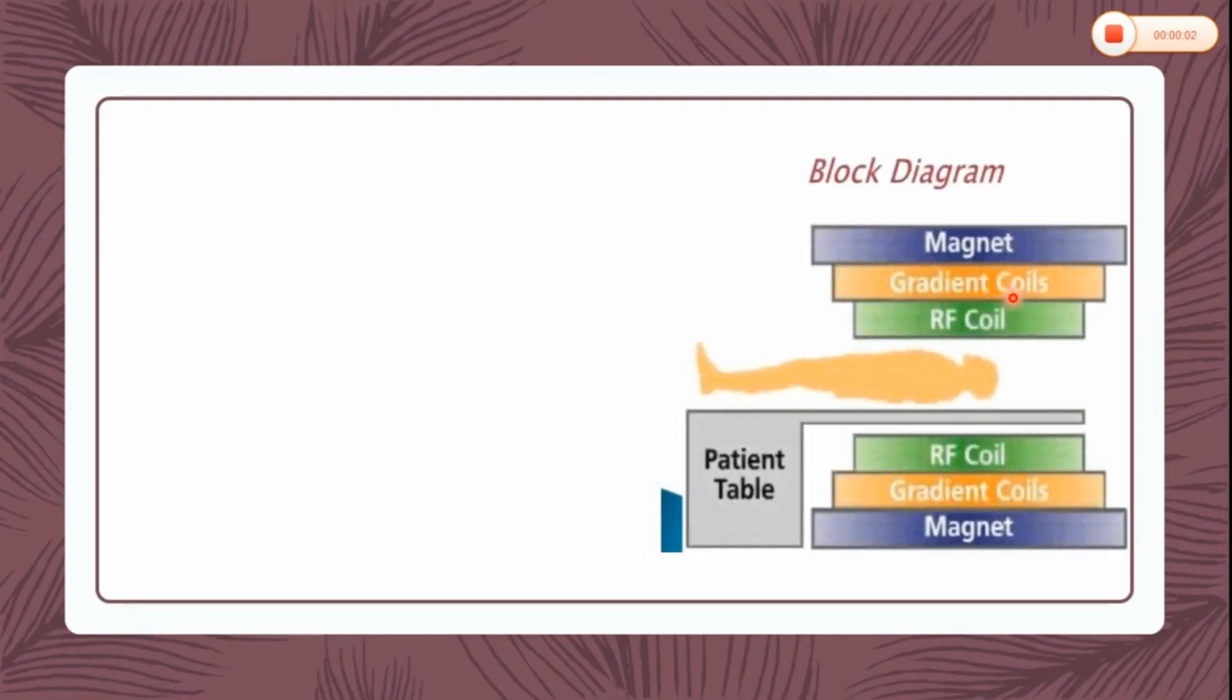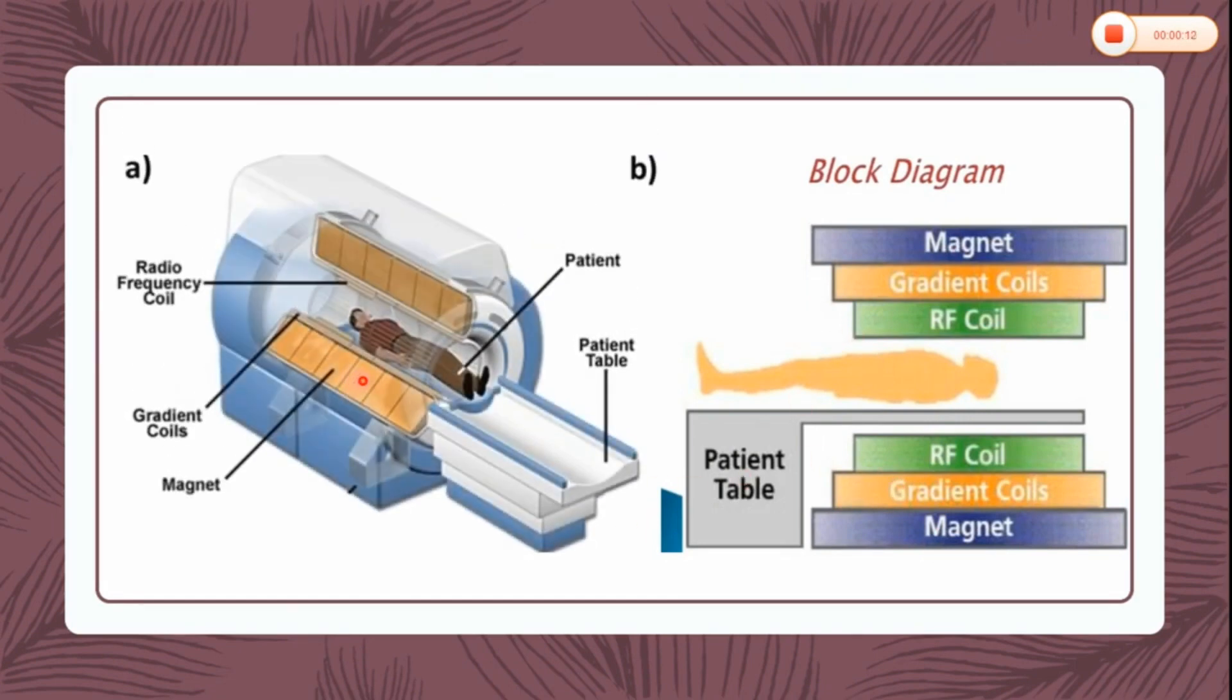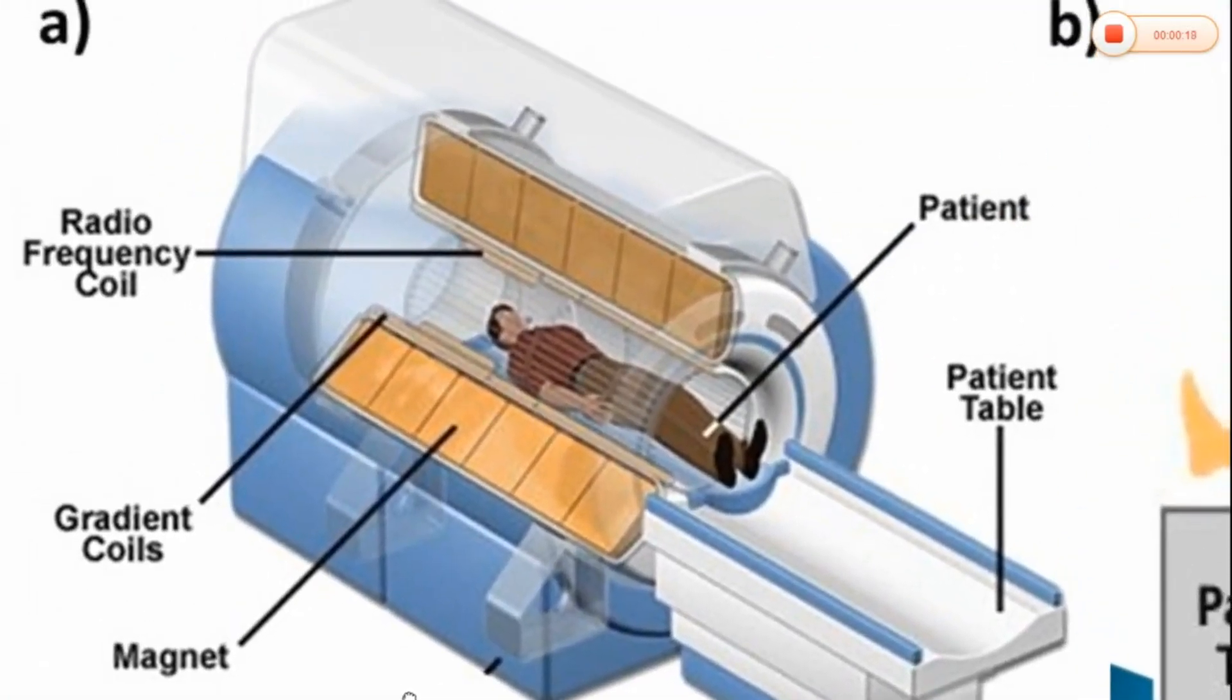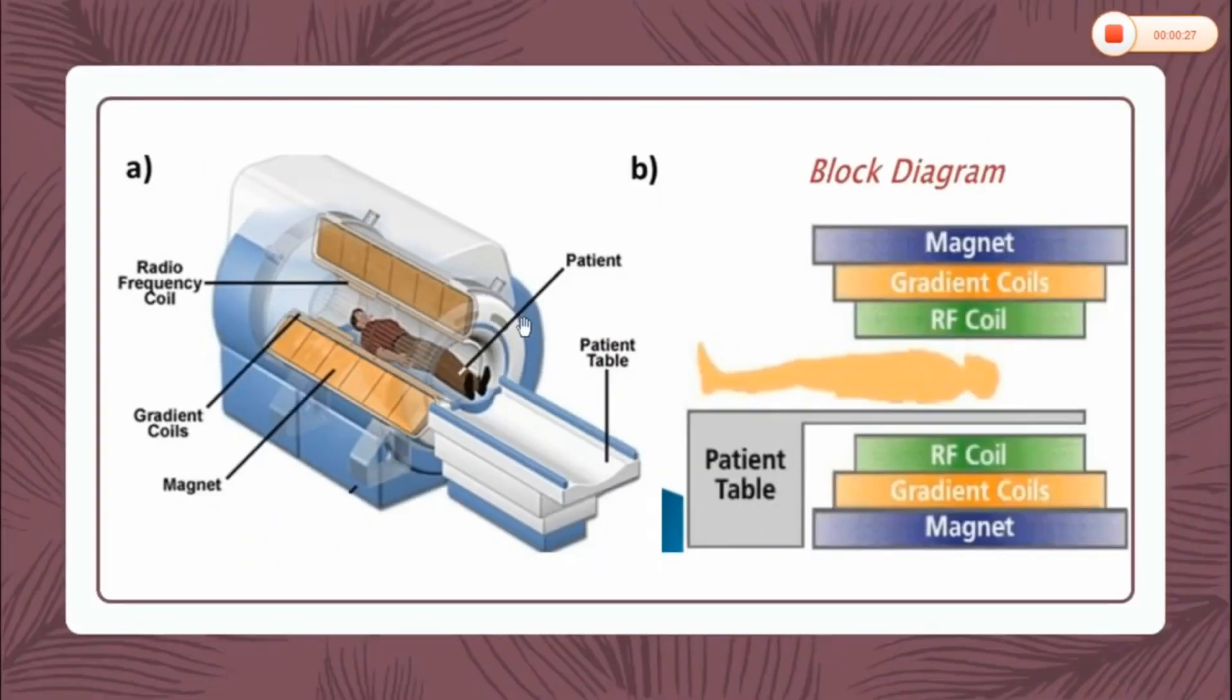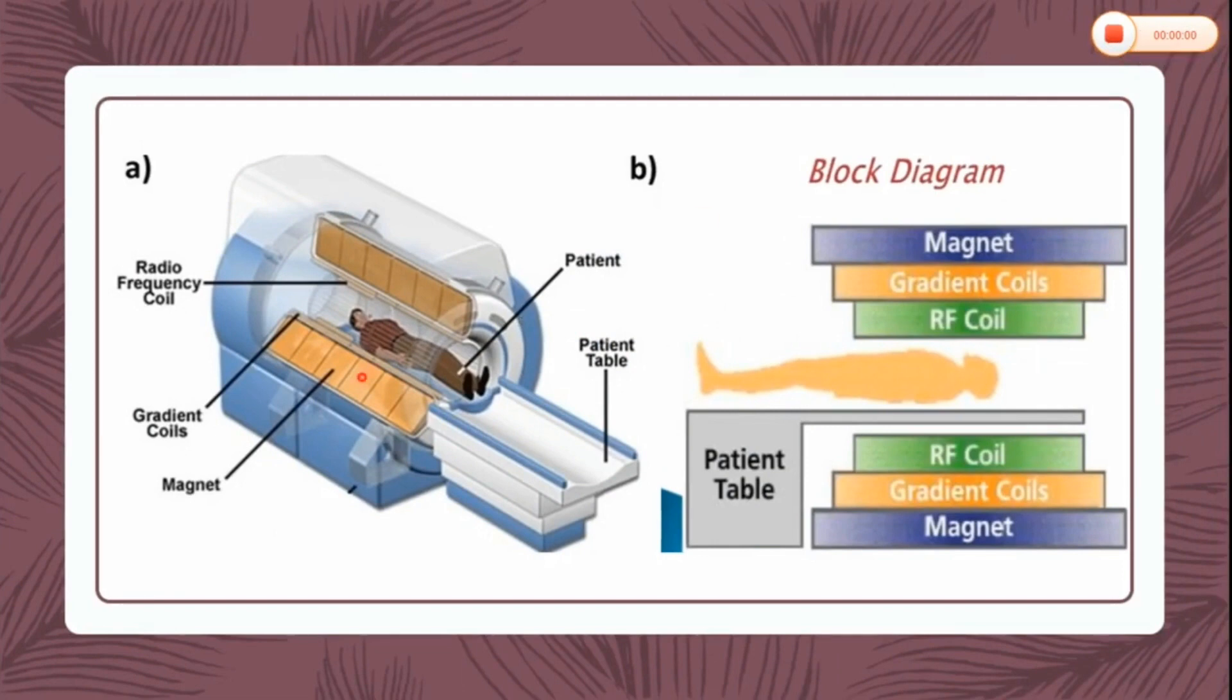This is a block diagram that indicates positions of RF coil, gradient coils, and magnet in an MRI machine. Here you can compare the same parts in this machine. Let's take a magnified view. See, first magnet, then gradient coils, and then RF coils or radio frequency coils. This part is the scanner, this is the patient table, and this is the patient.